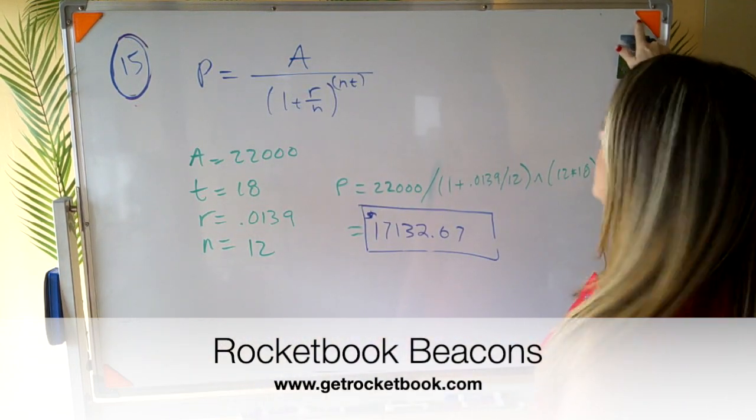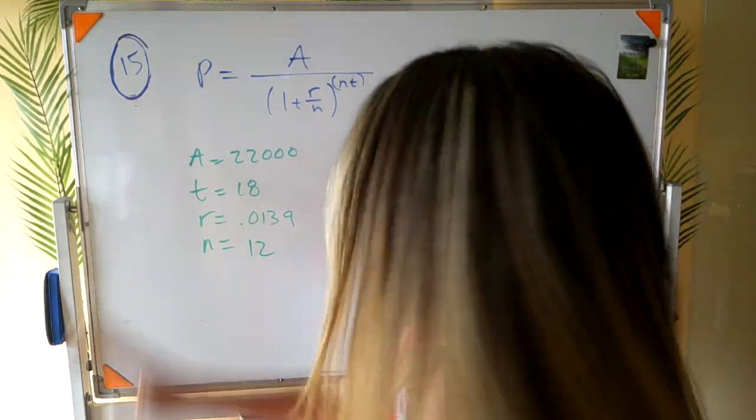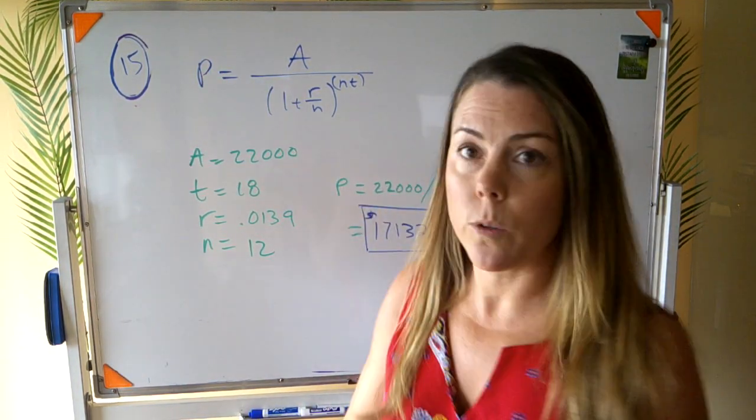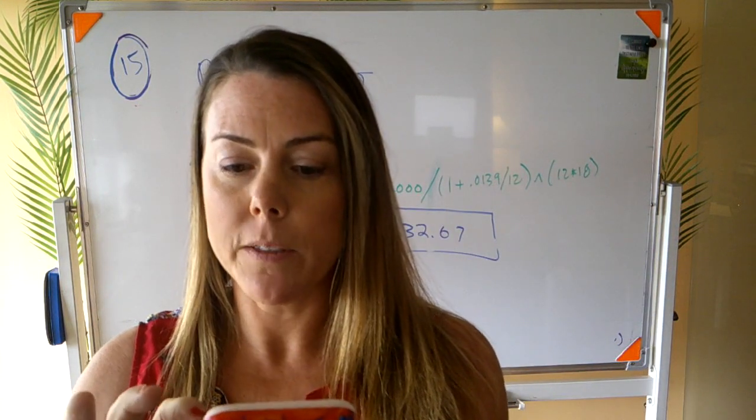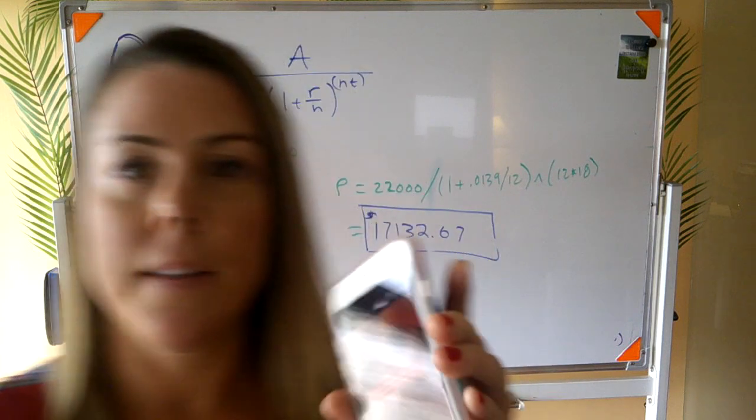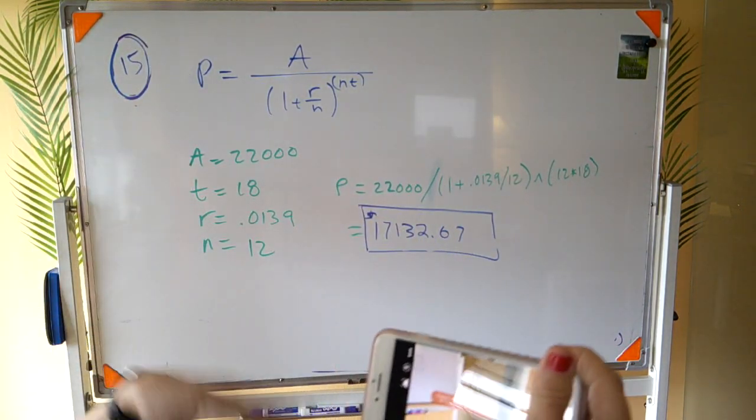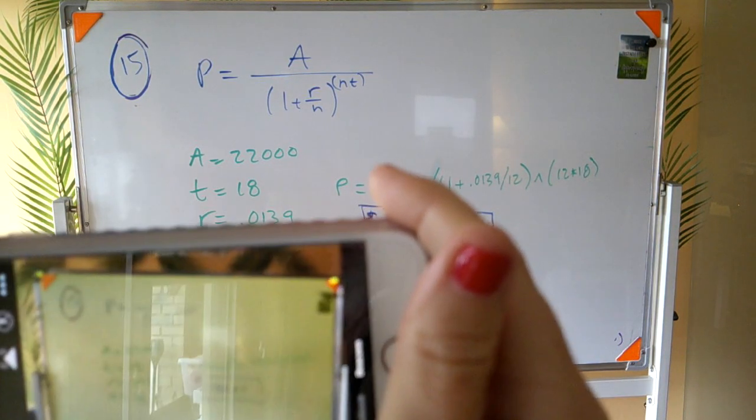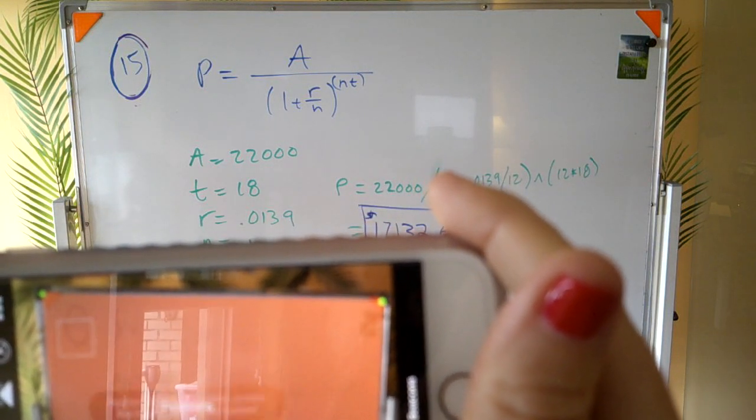These are called rocket beacons and how that works is I can scan my board. It's not that the board is a smart board but I use my cell phone. So I downloaded the app on my cell phone and then after I have a complete board, the students know what I'm doing and they're usually still copying down things. So then I come back and once the beacons are in view it captures the board.